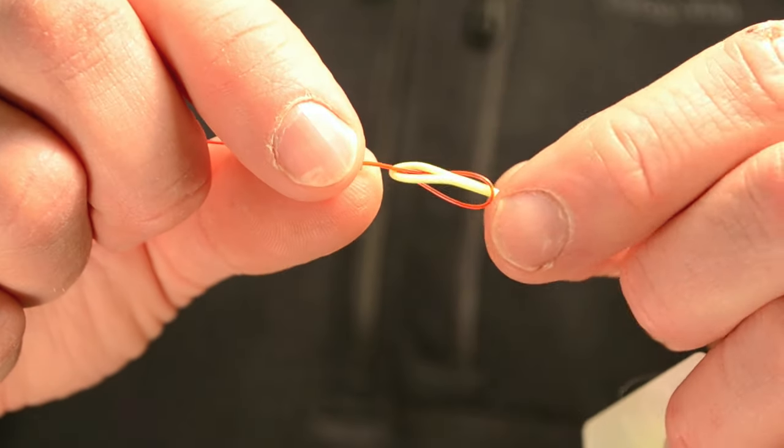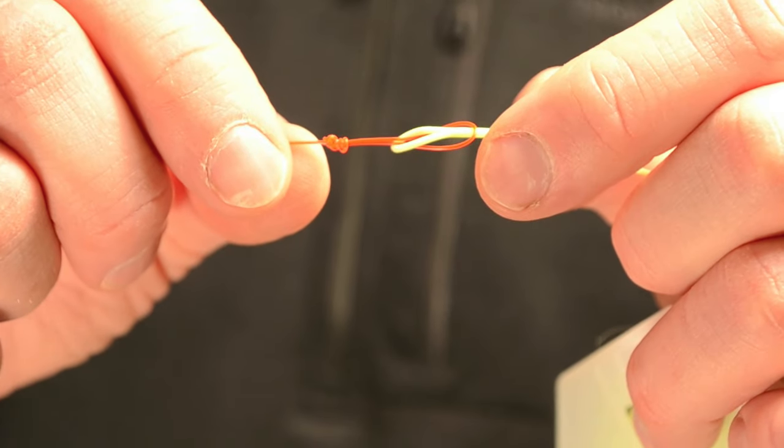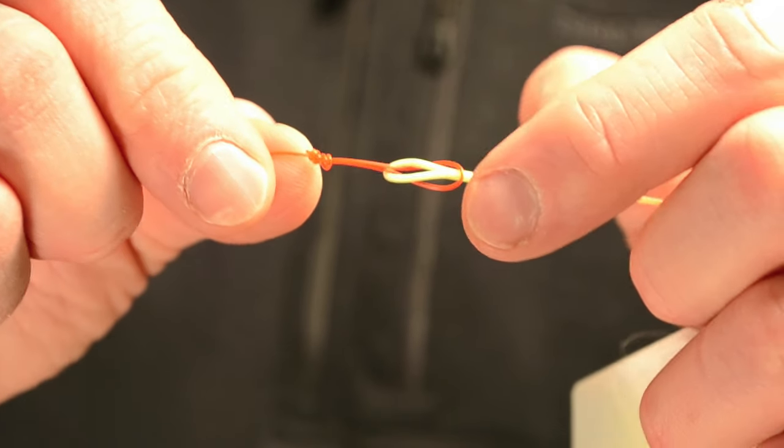We're going to go through that loop with the knot of your tippet. Then we're going to start cinching down.